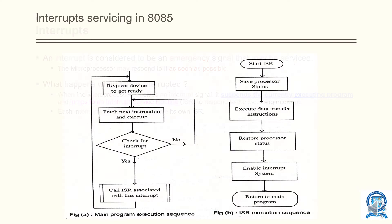This is the flow of an interrupt service. The processor runs its main program — you can see the main program execution sequence: request device to get ready, then the next instruction checks if there is any interrupt. If so, it calls the Interrupt Service Routine. Once called, the ISR begins: it saves the processor status so that if execution was stopped at that point, the status is preserved. Then it executes the data transfer instructions.